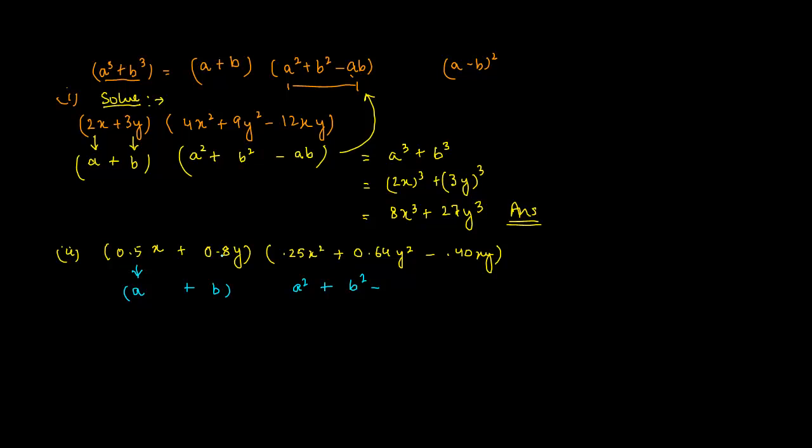0.40xy, 0.5 into 0.8 is 0.40xy, so this becomes ab. And again we know that this is equal to a³ + b³.